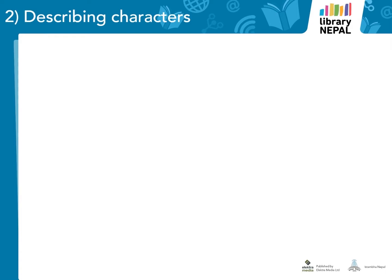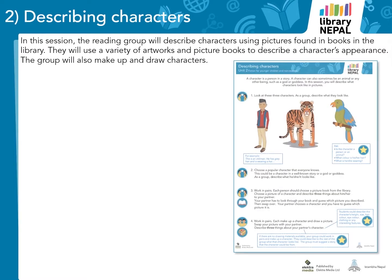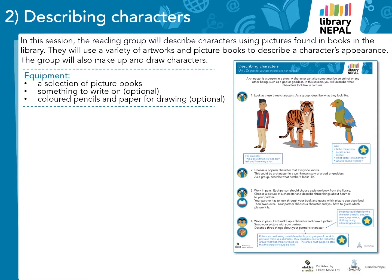Worksheet number 2: Describing characters. In this session, the reading group will describe characters using pictures found in books in the library. The students will use a variety of artworks and picture books to describe a character's appearance, and the group will also make up and draw characters. For this session, you need a selection of picture books and something to write and draw on. If this isn't possible, the writing and drawing activities can be done as group discussions instead.